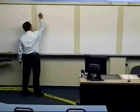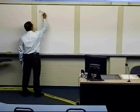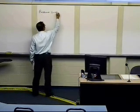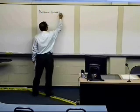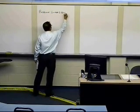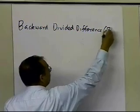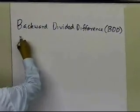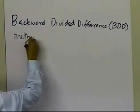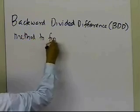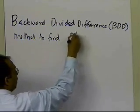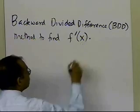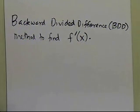In this segment, we're going to talk about the backward divided difference, which is also called the BDD method or scheme, to find the approximate value of the derivative of a function. That's what we're going to do in this particular segment.